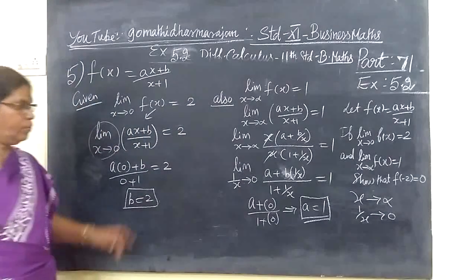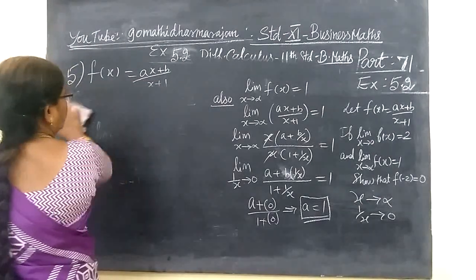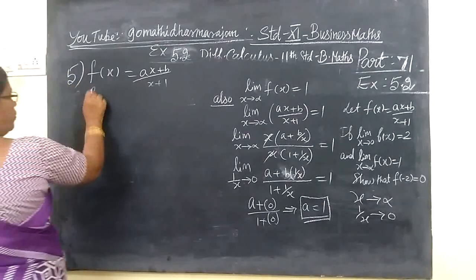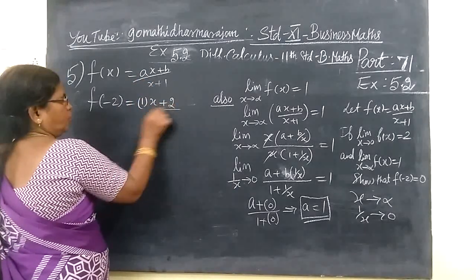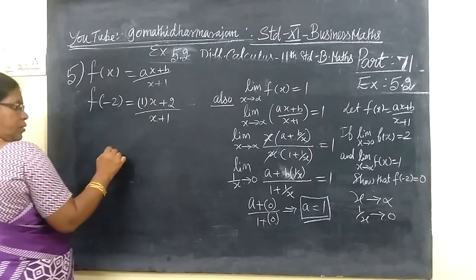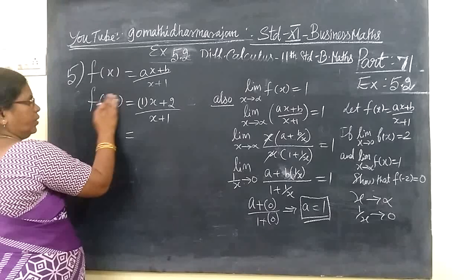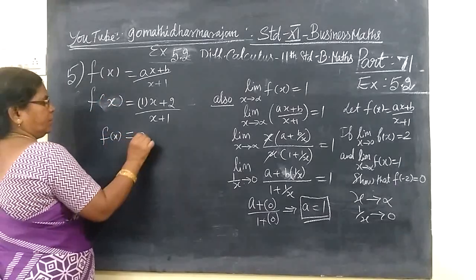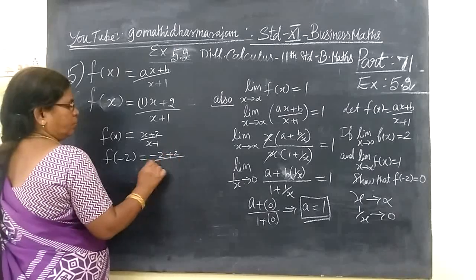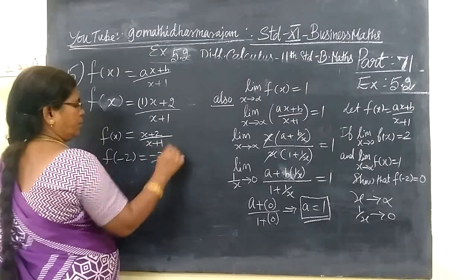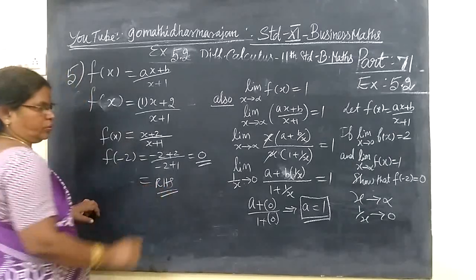A value is 1, B value is 2. So F of x equal to A value 1 times x plus B value 2 by x plus 1. This is A and this is B. So F of x is x plus 2 by x plus 1. Therefore F of minus 2 equals minus 2 plus 2 by minus 2 plus 1. That is 0. As we want to prove this as 0. So hope you understand.